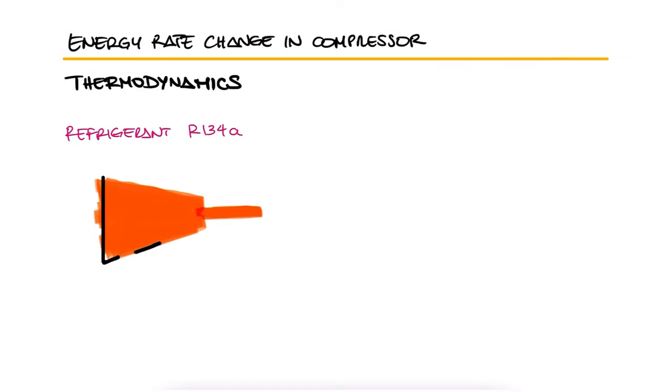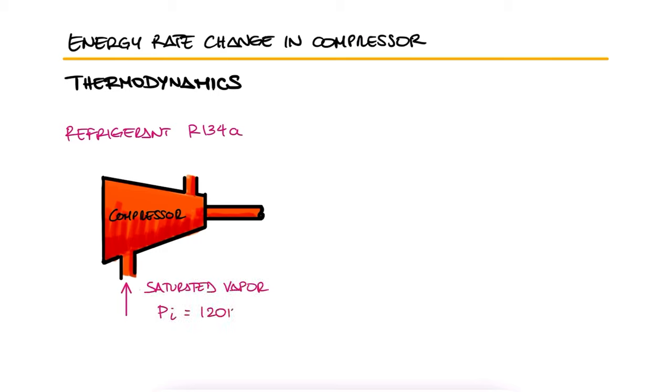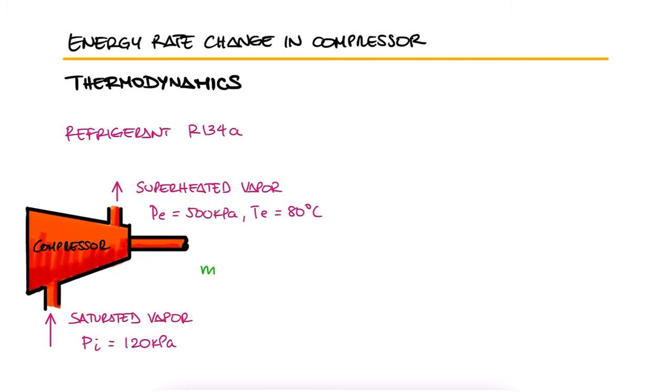Refrigerant 134A enters the compressor of a refrigeration system as a saturated vapor at 120 kilopascals and leaves as a superheated vapor at 500 kilopascals and 80 degrees Celsius at a rate of 0.08 kilograms per second. Determine the change of rate of energy transfer by mass of this compressor.